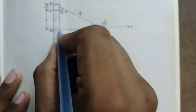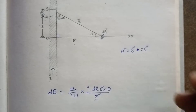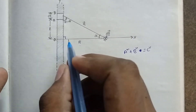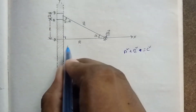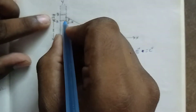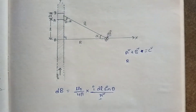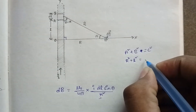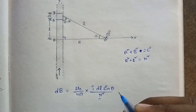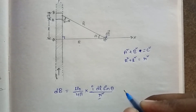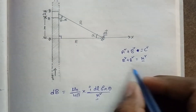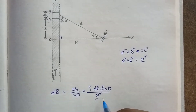Here we have a right angle triangle. Using Pythagoras theorem: a² + b² = c², that is adjacent side squared plus opposite side squared equals hypotenuse squared. So we have capital R² plus L² equal to small r², which means small r² equals R² plus L².